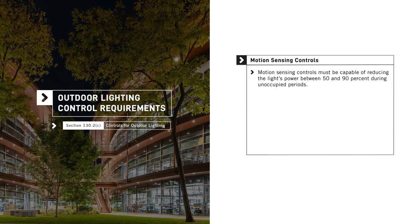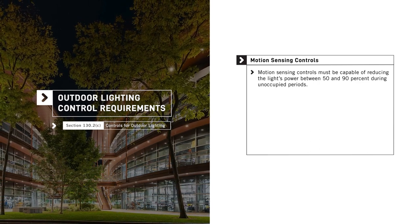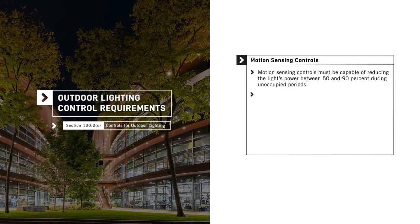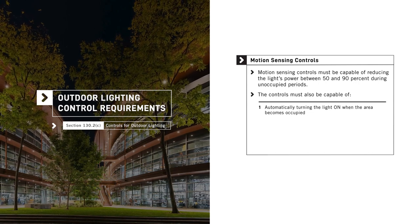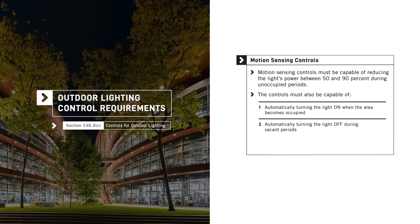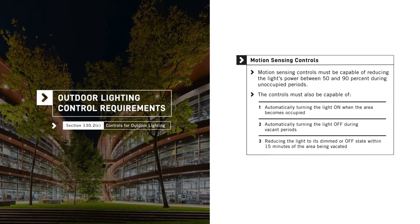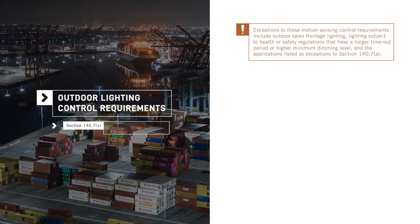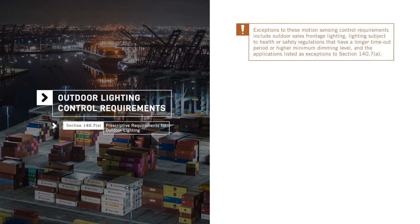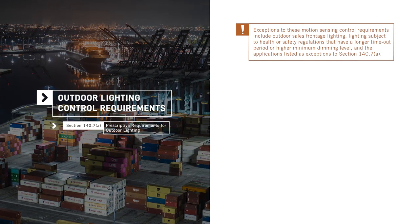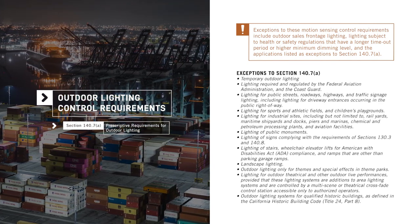Motion sensing controls must be capable of reducing the light's power between 50 and 90 percent during unoccupied periods, including those that occur during business hours. The motion sensing controls must also be capable of automatically turning the light on when the area becomes occupied, automatically turning the light off during vacant periods, and reducing the light to its dimmed or off state within 15 minutes of the area being vacated. Exceptions include outdoor sales frontage lighting, lighting subject to health or safety regulations that have a longer time-out period or higher minimum dimming level, as well as the applications listed as exceptions to Section 140.7.